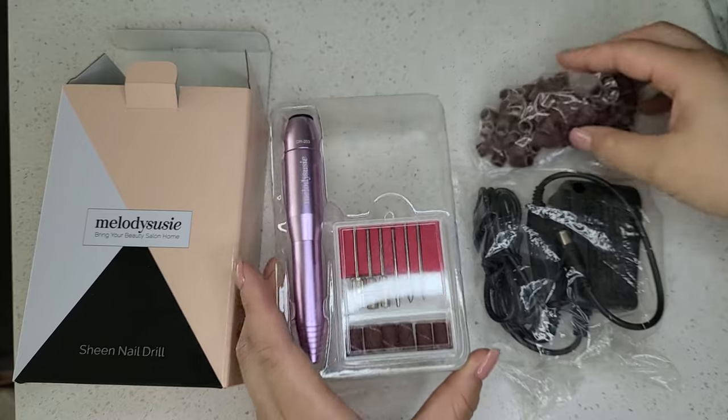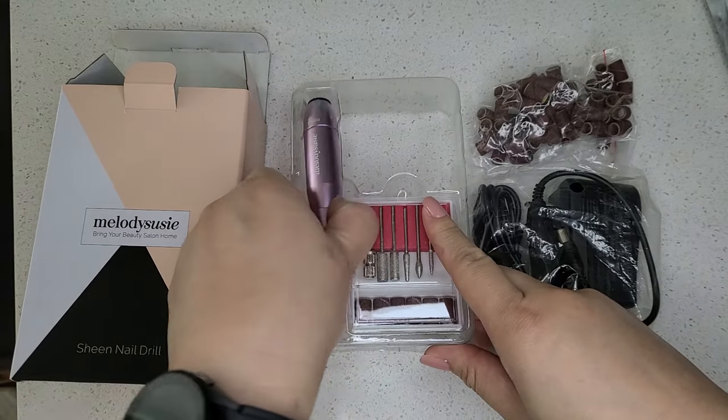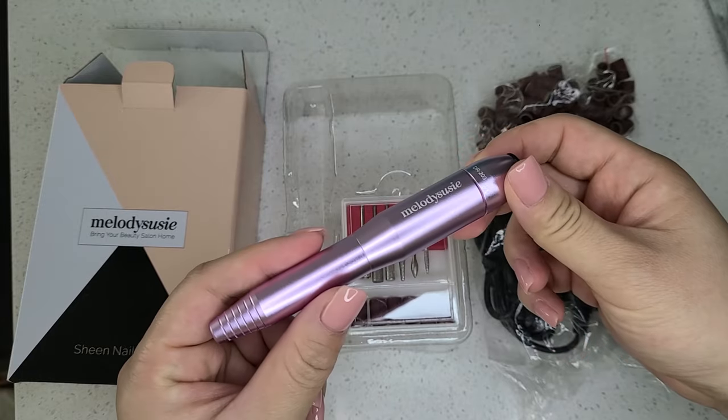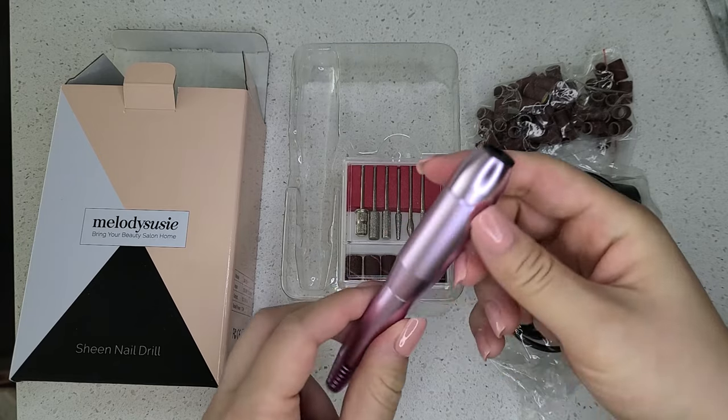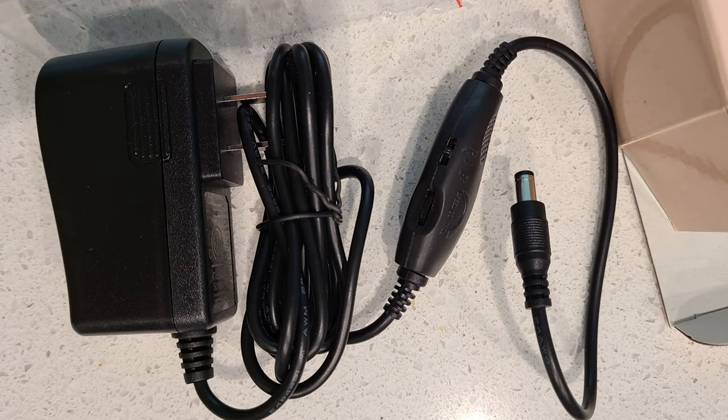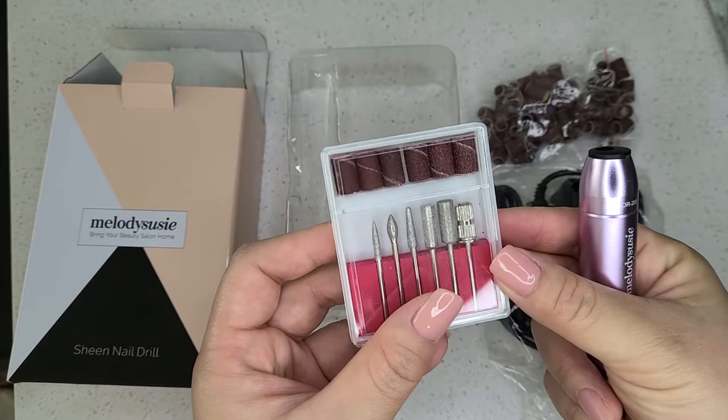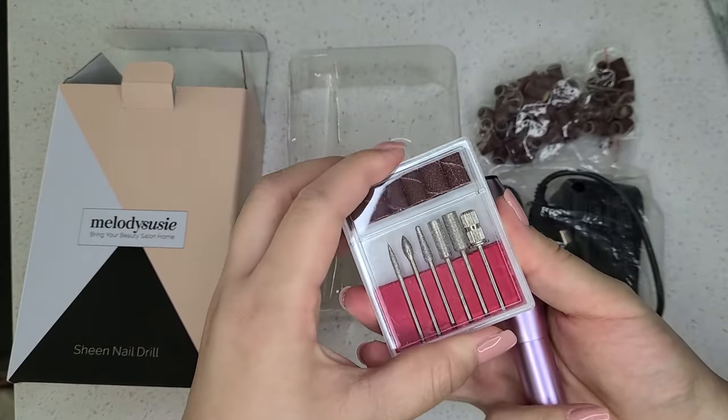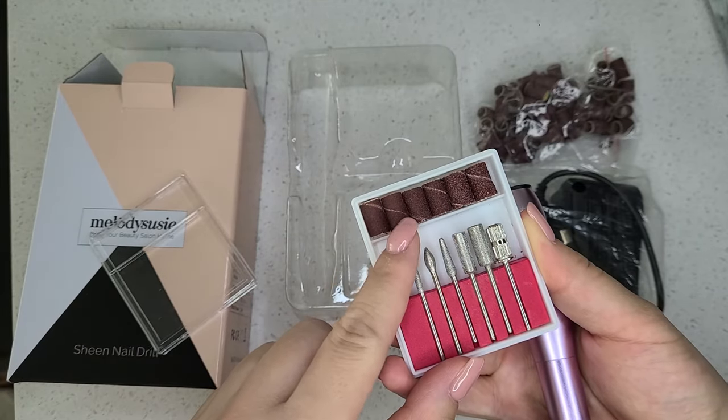So for around $20, you can get this beginner e-file kit. It comes with the handpiece, a cord, which there's two cords to choose from. You can choose the USB plug-in cord or the direct power cord. I have the direct plug here. There is a starter bit set with diamond bits and a mandrel bit, and they give you many sanding bands to go with the mandrel bit.